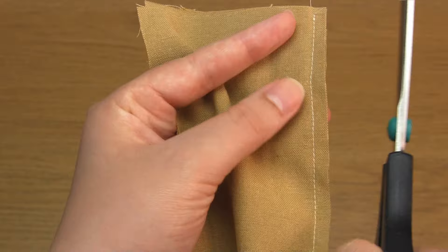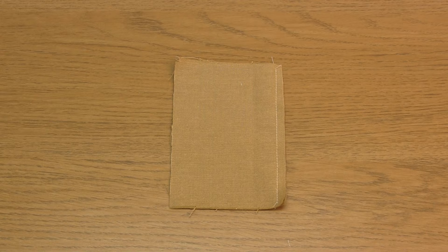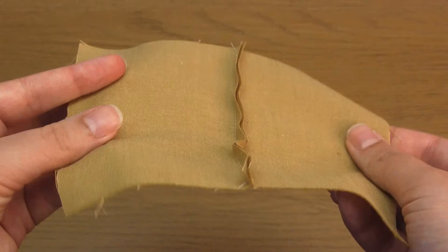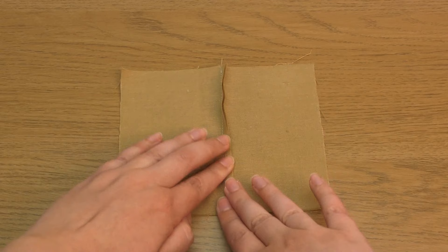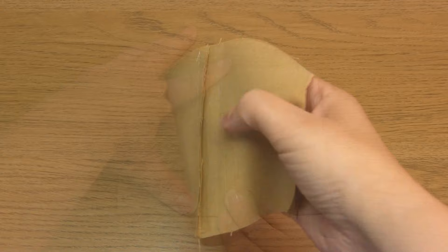Next you just need to open the fabric out and use an iron to press the seam allowance to one side. Pressing is an important step as it'll make the finished result a lot neater. And this is what your seam should now look like.